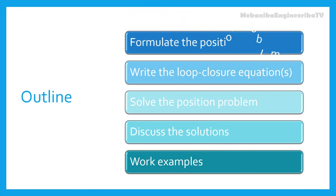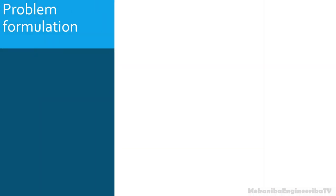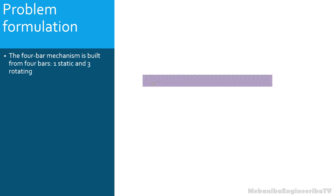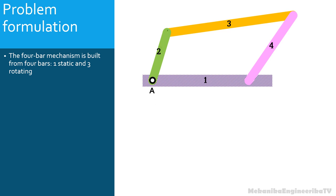Let's start now with the first part: problem formulation. The four-bar mechanism is built from four bars — one reference static bar and three rotating bars — which are assembled together using four rotating or pin kinematic pairs. Two of the rotating bars have fixed-axis rotation motion: bars AB and CD. The third bar, BC, has a general motion.